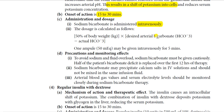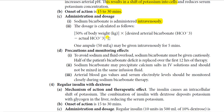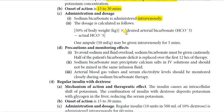Multiply by the desired arterial bicarbonate level — the normal value you want to achieve — minus the actual bicarbonate level, which you have determined from a blood test. So: 50% of body weight × (desired arterial bicarbonate − actual bicarbonate) = dose. This multiplication gives you the calculated dose.